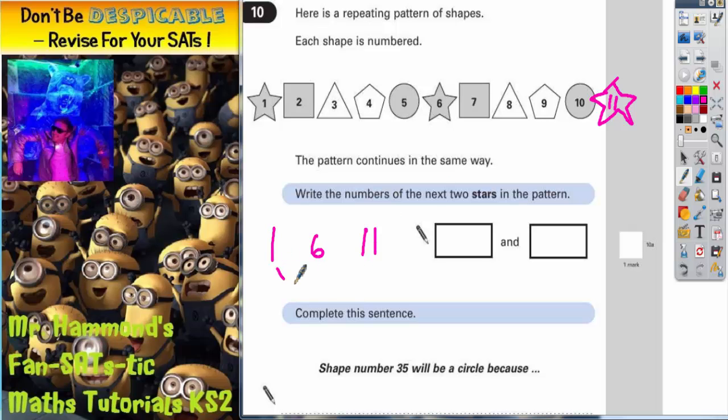Now you should be able to see what's happening by this point - they're adding on 5 each time. So 1 plus 5 is 6, 6 plus 5 is 11. So it's correct to expect that the pattern will continue in the same way because it says so.